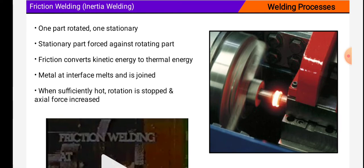One part, again Friction Welding, Inertia Welding, it is also called Inertia Welding. The part rotated, one stationary part pushed against rotating part. Friction converts kinetic energy to thermal energy. Metal at interface melts and is joined. When sufficiently hot, rotation is stopped and axial force increased.